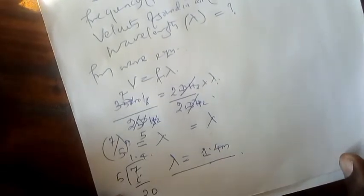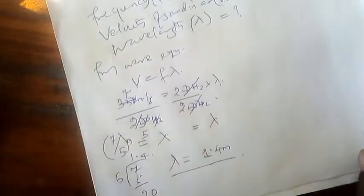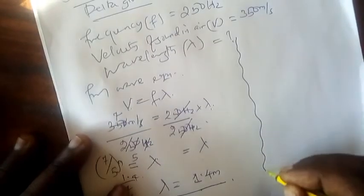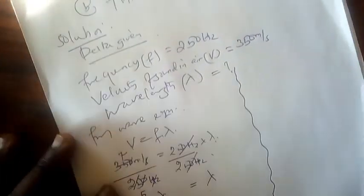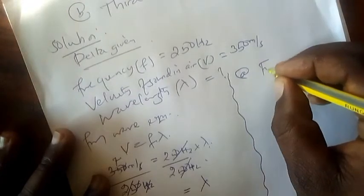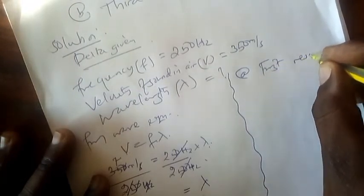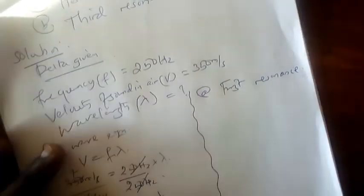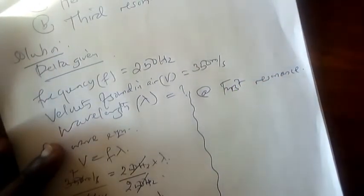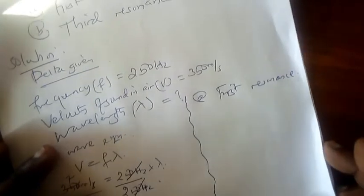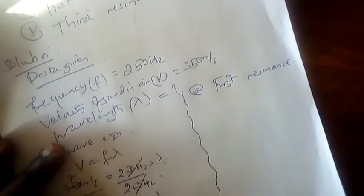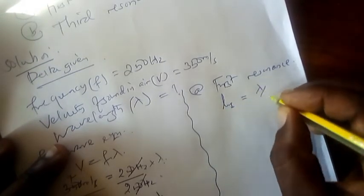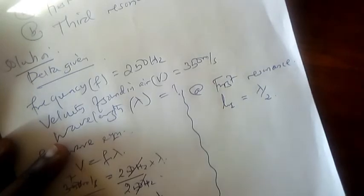Now we have the wavelength. But in the question, we weren't asked for wavelength. However, this that we've found will help us find first resonance and third resonance. We start with question A, which asks for first resonance. If you look at this question, it has no end correction. So we will insert the formula directly. It says L1 equals wavelength over 2.